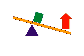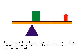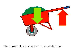Again, the same rules of proportion are at work. If the effort applied is three times farther from the fulcrum than the load, the amount of effort needed to move the load is reduced to a third. This lever form is found in a wheelbarrow and a nutcracker.